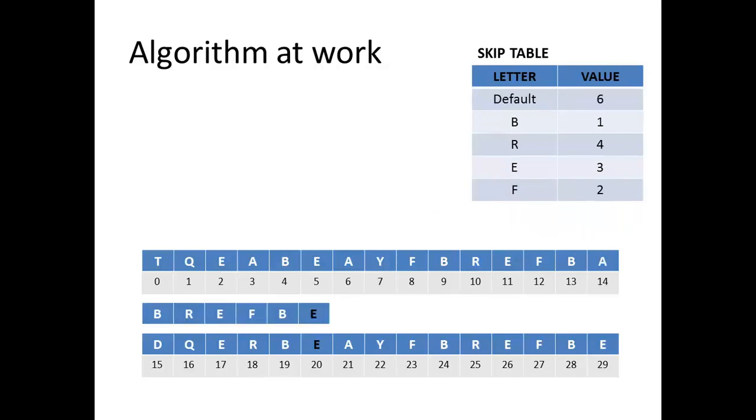After moving by 6, we proceed normally. E gives a match, B gives a match, F and R give a mismatch. So we will move along by the skip value of E. E and F give a mismatch. So F has a skip value of 2, we move by 2.